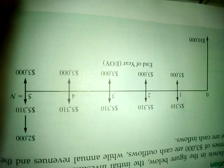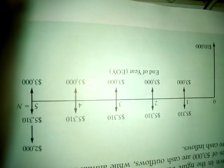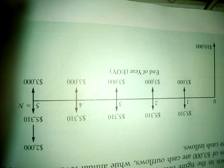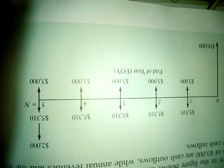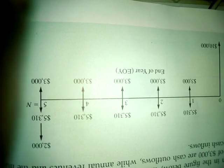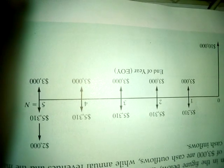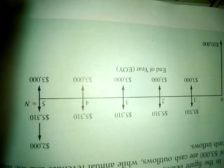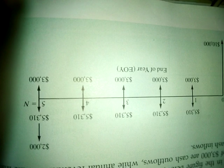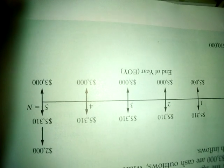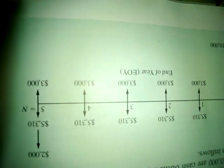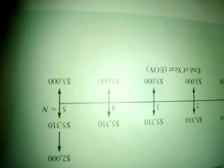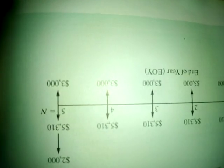Going along the cash flow, you see the annual revenue — revenue is something that comes to you. The revenue that comes to the company for five years is five thousand three hundred ten dollars. So it is plotted upward: every year you receive five thousand three hundred ten dollars, shown as arrows pointing up.